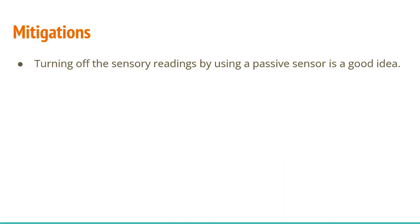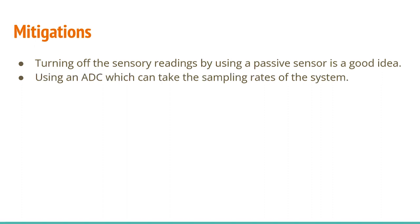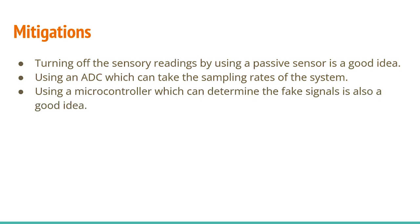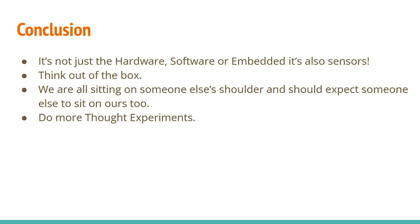For mitigations: turning off the sensors, taking sensory readings using a passive sensor is a good idea. Using an ADC which can handle the sampling rates of the system is also good. Using a microcontroller that can determine fake signals is also a good idea - and this has been implemented by some companies. It's not just the hardware, not just the software, not just the embedded - but it's also the sensors which are very important and can be hacked. Keep thinking out of the box. There's a reason why great hackers became great - we're all sitting on someone else's shoulders, and we'll expect someone to sit on ours someday. That makes us a better community and that's the power of hacking.